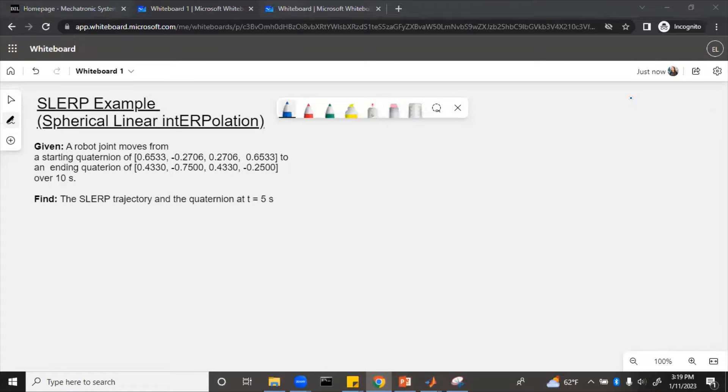We are given an example where a robot joint moves from a starting quaternion of 0.6533, negative 0.2706, 0.2786, and 0.6533 to an ending quaternion of 0.4330, negative 0.75, 0.433, and negative 0.25, over 10 seconds. Find the SLERP trajectory and the quaternion at t equals five seconds.